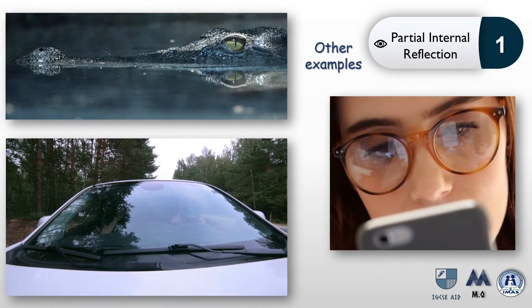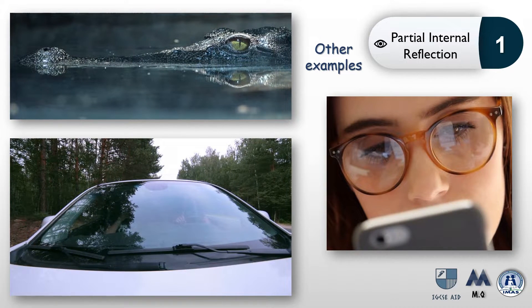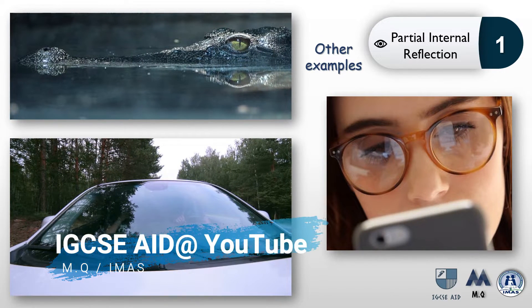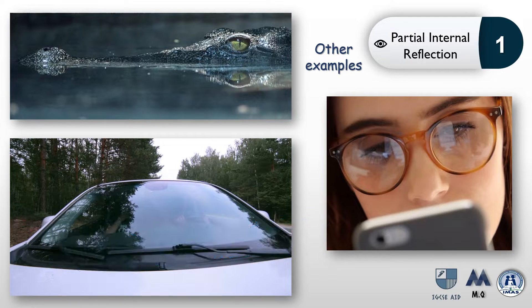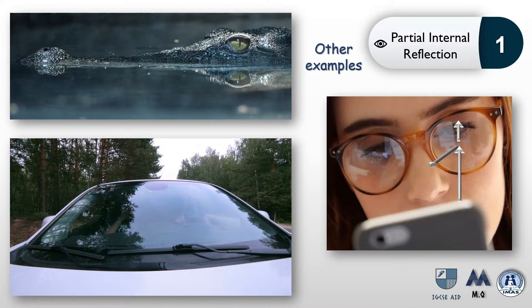Looking at other examples in nature: in the first picture, a girl is looking at her phone and you can notice an image of her phone screen forming on her glasses. Part of the light transmitted through the glasses to her eyes, while the remaining part of the incident ray was reflected towards the camera.